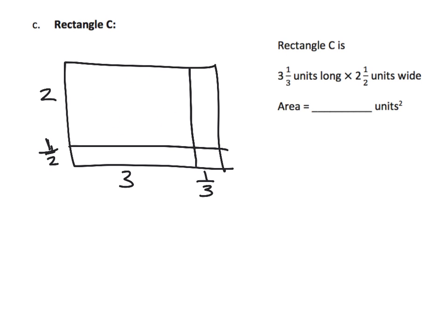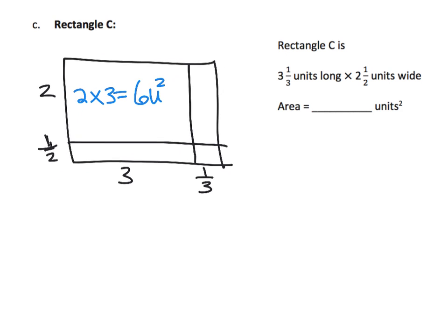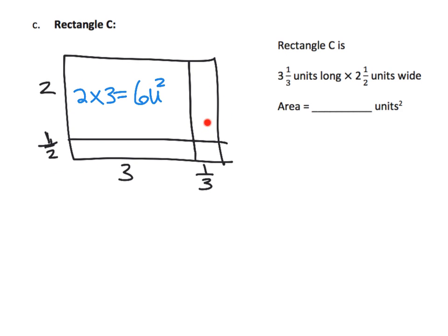The first rectangle has a height of two and a width of three, so two times three equals six square units. The next area has a width of one-third and a height of two, so two times one-third equals two-thirds square units. So far our partial products are six and two-thirds.